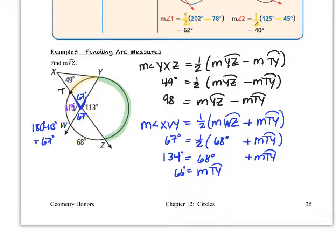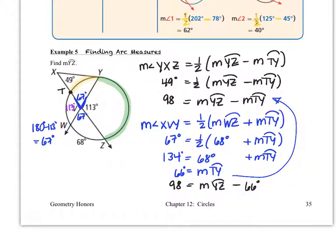Now we can substitute back into what we originally had: 98 equals the measure of arc YZ minus the measure of arc TY, which is 66. So the measure of arc YZ is 98 plus 66, which gives us 164 degrees. The measure of arc YZ is equal to 164 degrees.